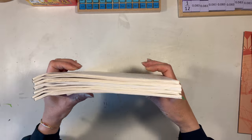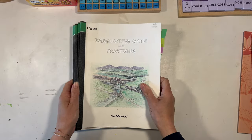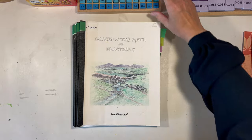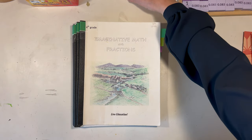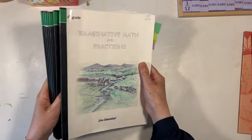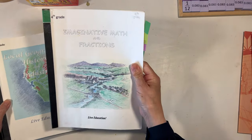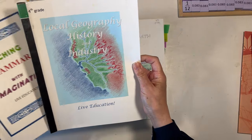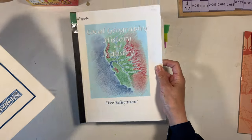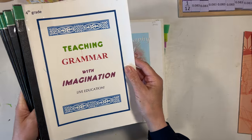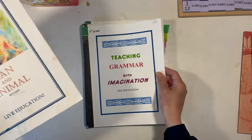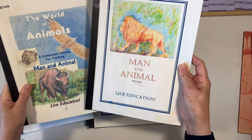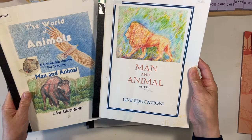Waldorf curriculum uses the main lesson block approach, and for year four you're going to have imaginative math with fractions, local geography, history and industry, and teaching grammar with imagination.